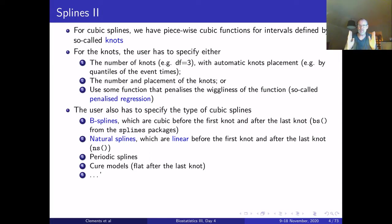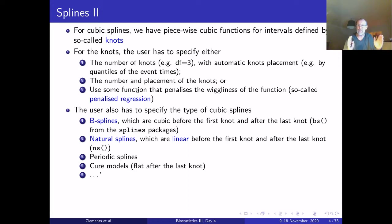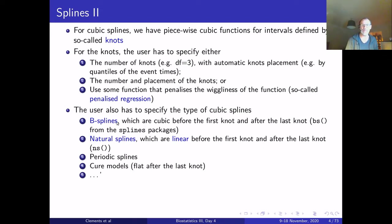For cubic splines, we have knots — a term for values that split up the x-values into intervals. The user has to either specify the number of knots (such as three, four, or five), with automatic knot placement using quantiles of the event times, or specify both the number and placement of knots. Alternatively, we can use many knots and find a function that fits nicely using penalized regression.